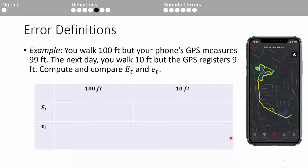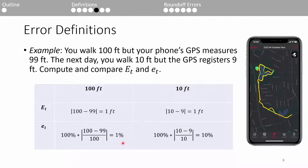Let's do an example to illustrate these two errors. Say you walk 100 feet on a measured track, but your GPS claims that you only walked 99 feet. The next day, you walked 10 feet, but your GPS says 9 feet. For the 100-foot case, the absolute error is 100 minus 99 equals 1 foot. For the 10-foot case, it's 10 minus 9 equals 1. Both cases had the same absolute error. If we compute the true relative error, we get 100 percent times 1 over 100 equals 1 percent for the 100-foot case, and 100 percent times 1 over 10 equals 10 percent for the 10-foot case. Here we can see that even though both cases had the same absolute error of 1 foot, the 10-foot case had a significantly larger relative error. We can conclude that the GPS did a much better job at measuring the 100 feet than the 10 feet.